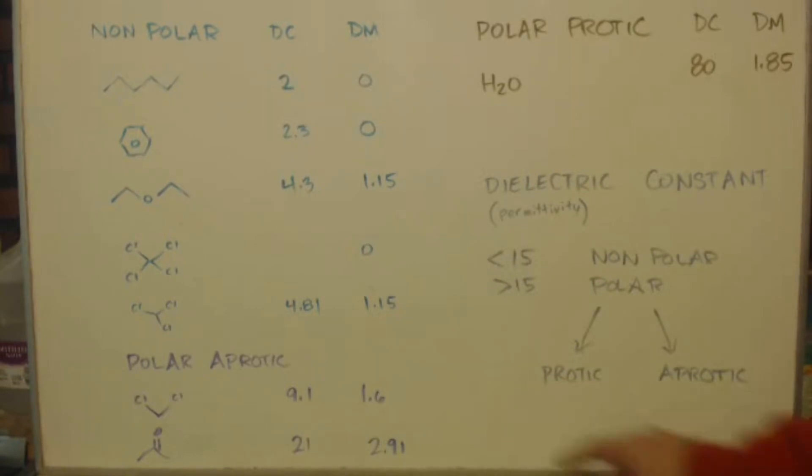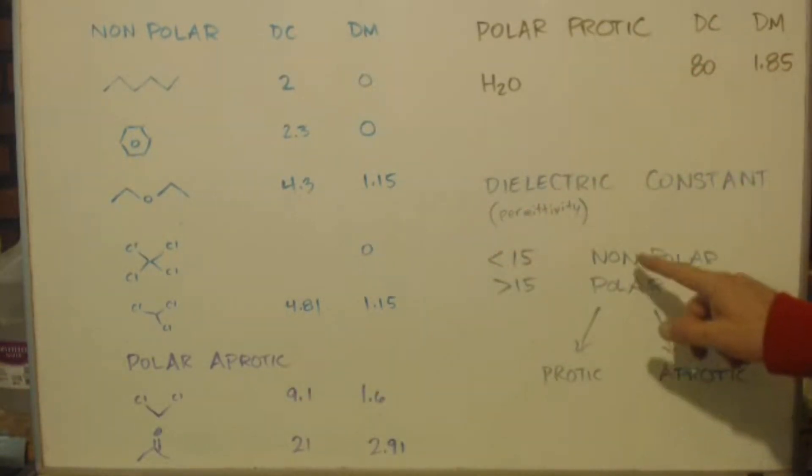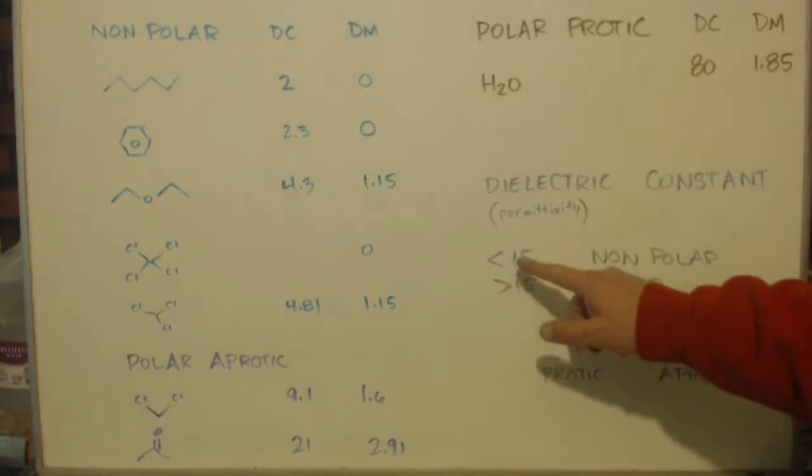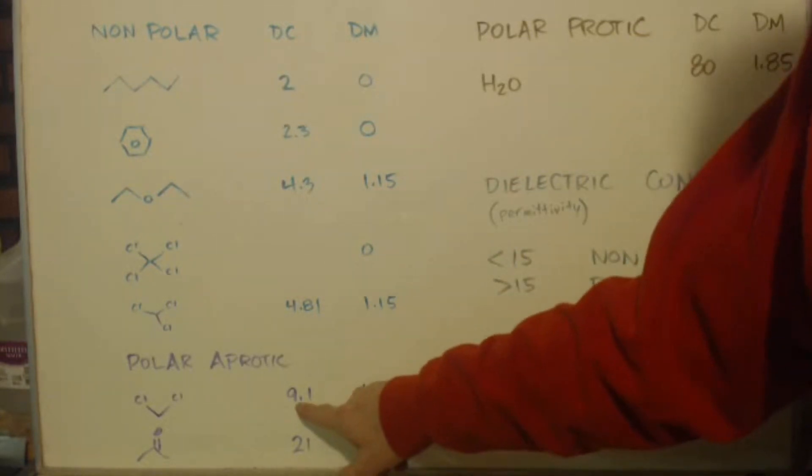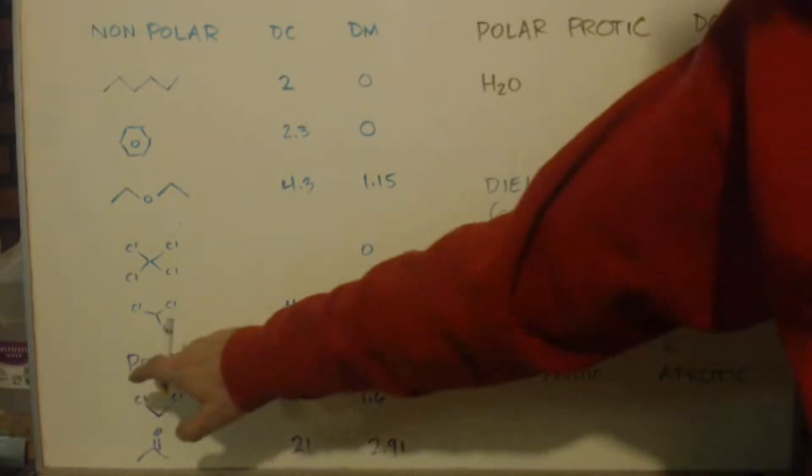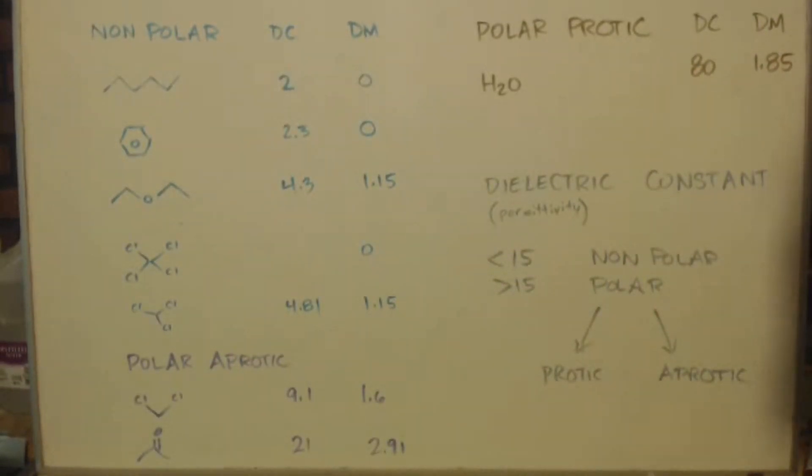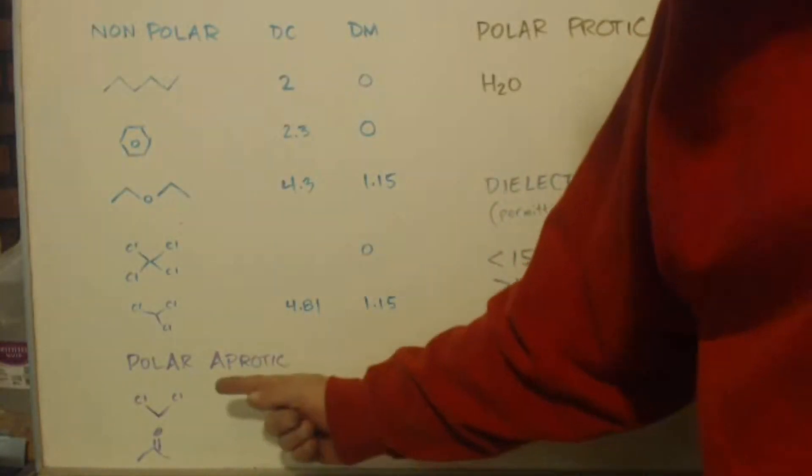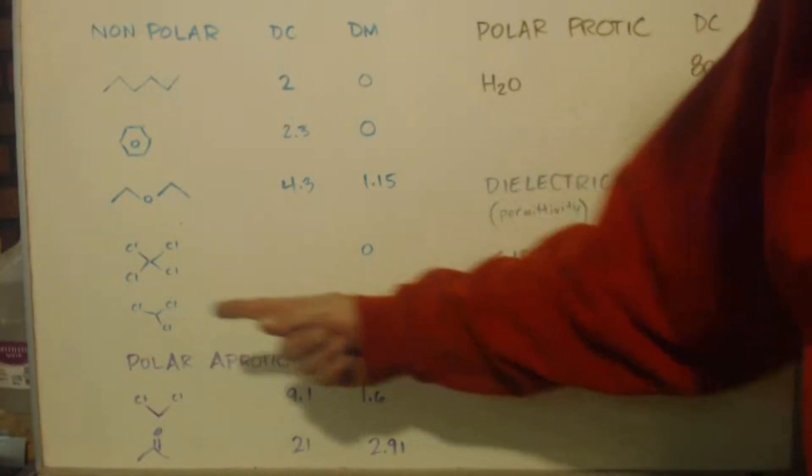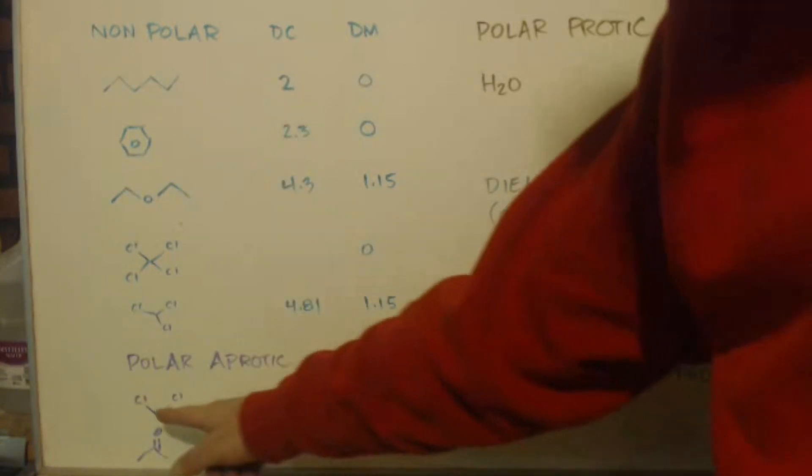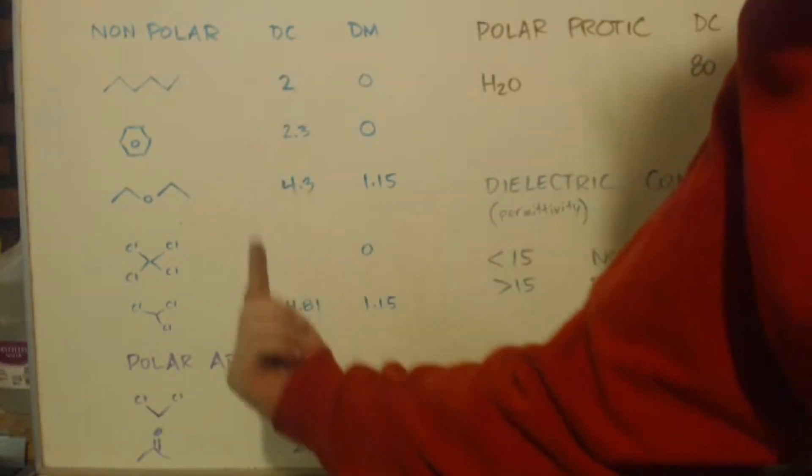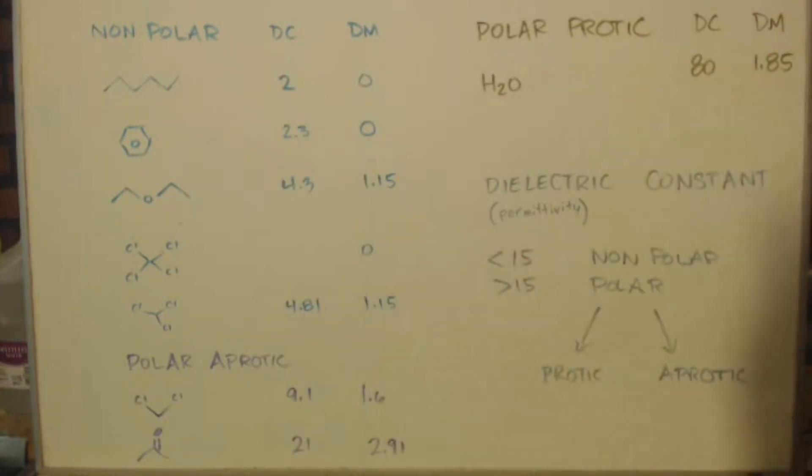But I want you to notice, look at that dichloromethane. According to this, anything less than 15 is non-polar. 9.1 is less than 15, but we call it polar aprotic. Why? Because there's always an exception to the rule. It is polar because you can tell with two vectors that horizontal vectors are going to cancel out, but the vertical vectors are going to combine. So you'll have a total dipole moment pointing straight up and down to split these up. So there is polarity on this.